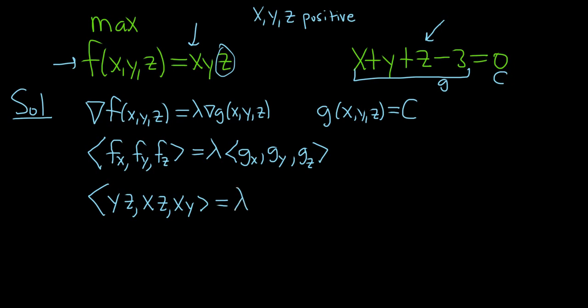This is equal to lambda times: for g_x, the derivative of x is 1 and everything else is 0, so we just get 1. For g_y, the derivative of y is 1 and everything else is 0, so we just get 1. Same thing for g_z. So this is equal to lambda, lambda, lambda.